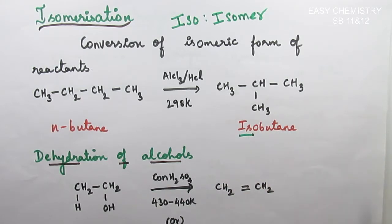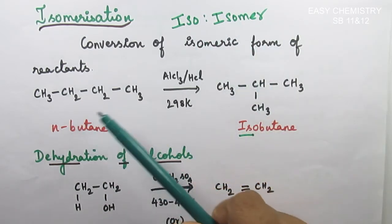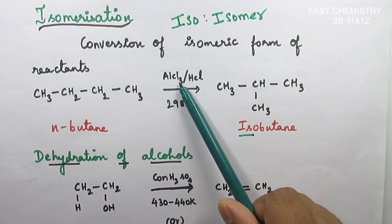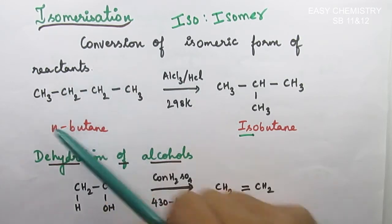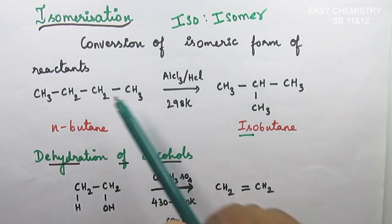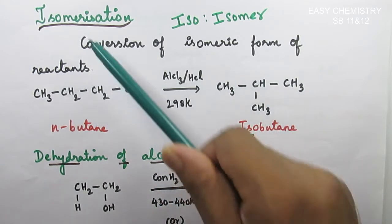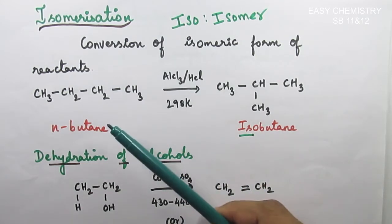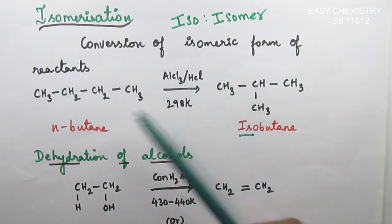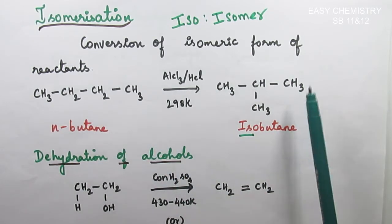Isomer of butane. This is very easy. In the presence of AlCl3 and HCl. These compounds share the same molecular formula but have different structural formulas — that is known as isomerism. The two compounds are called isomers, and this process is called isomerization.